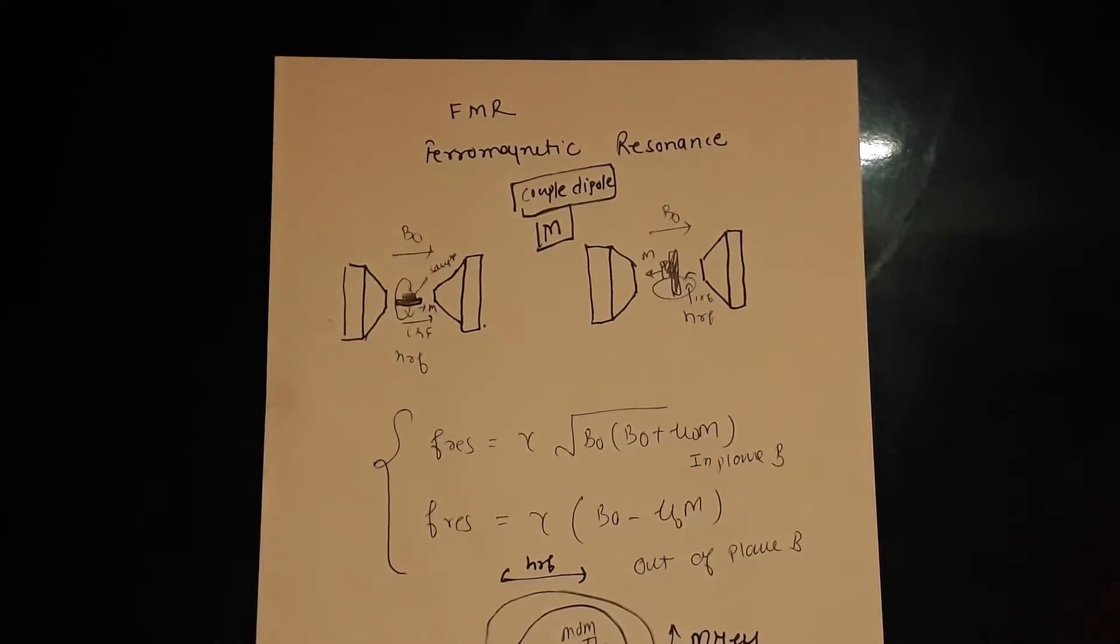In NMR you have a single spin. You apply a static magnetic field and the spin will precess around that magnetic field. If you apply an orthogonal changing field corresponding to the precession frequency, you'll see a resonance.